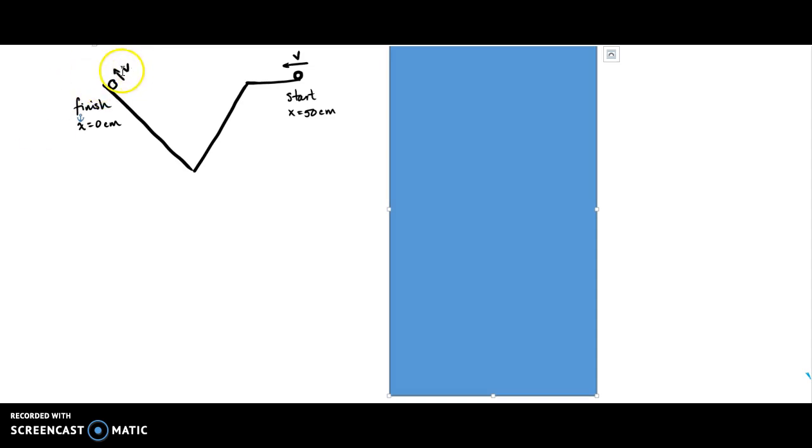Okay, so we're not going to extrapolate what happens after this. This is the only part we care about. So, with that information, your job is to draw a position time graph, a velocity time graph, and acceleration time graph for this object's motion.